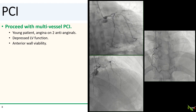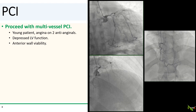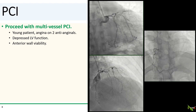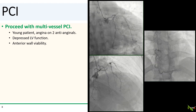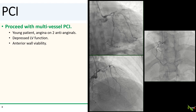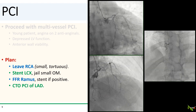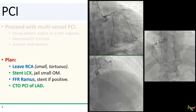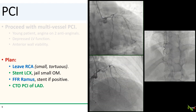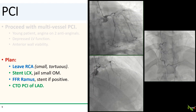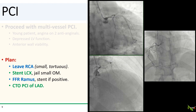After some discussions, we decided to proceed with an attempt at multivessel PCI. The patient was still fairly young and had persistent angina on two antianginal medications. His EF was depressed and the anterior wall was viable. Our plan: leave the RCA alone — it's small and tortuous and best treated medically. We're going to stent the circumflex and jail that OM, FFR the ramus and stent if positive, and with the anterior wall viable, go after the CTO of the LAD.